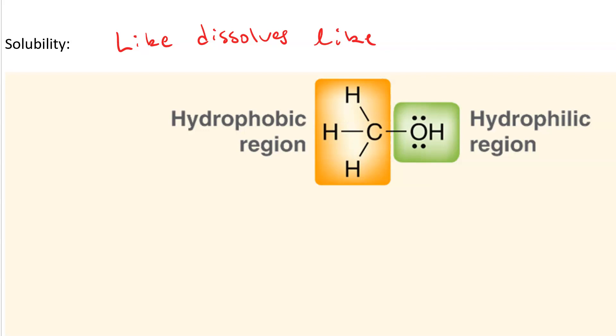With alcohols, we say they have a hydrophobic region and a hydrophilic region. The hydrophobic region is the CHs and the hydrophilic region is the portion that does hydrogen bonding, right?